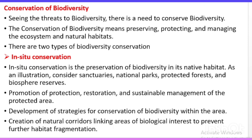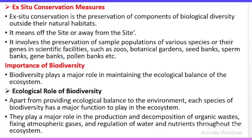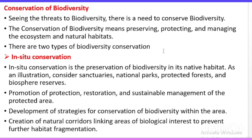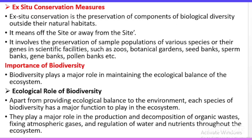The second type of conservation is ex-situ conservation — the conservation of biodiversity outside the natural occurring area, i.e., off-site or away from the native habitat. Examples include DNA banks, sperm banks, collection of living organisms for research and development, botanical gardens, zoological parks, and wildlife safari parks.